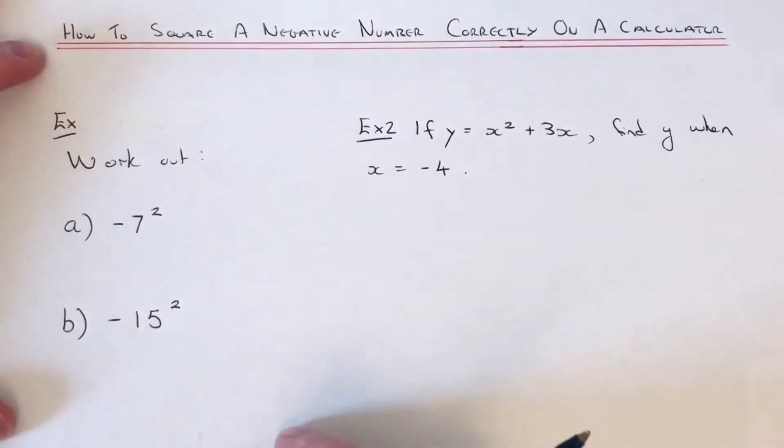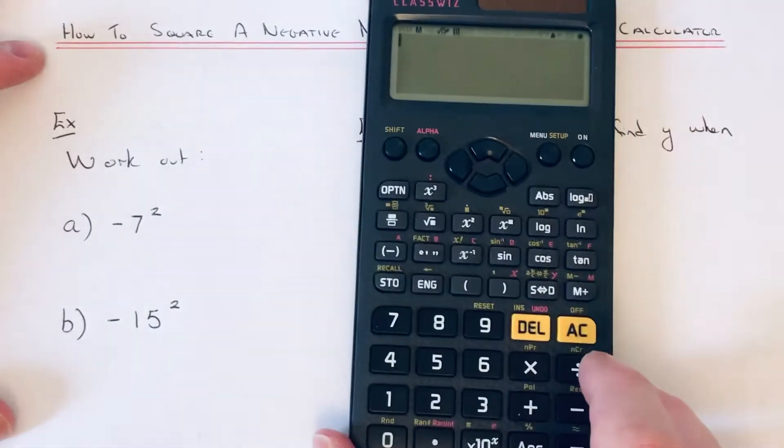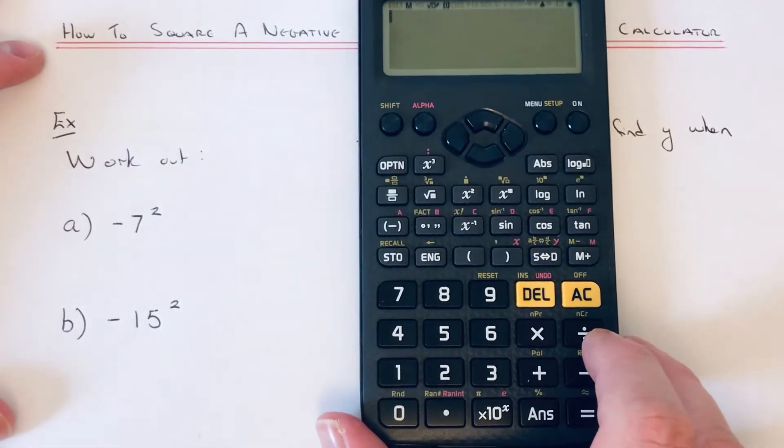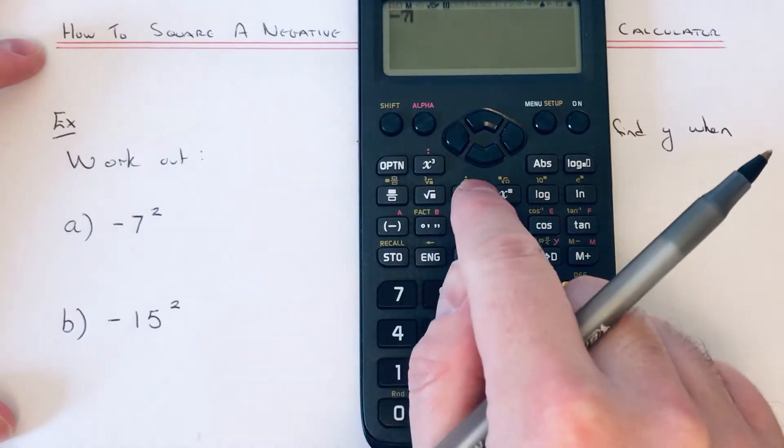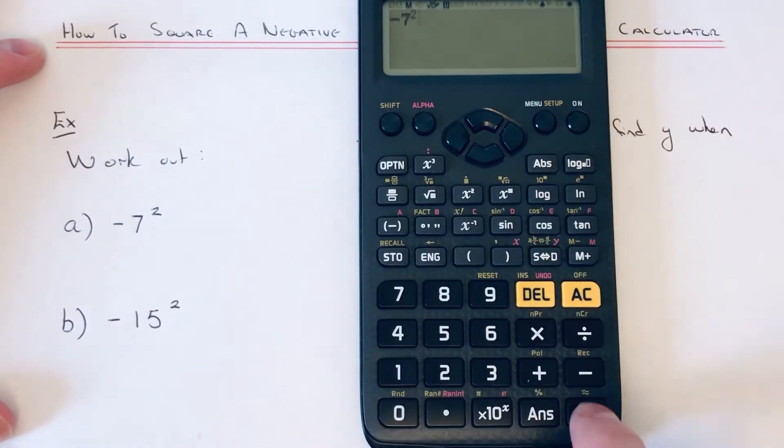Let's have a look at the first example. We're going to work out minus 7 squared. I've got my calculator here. If I just typed it in like it is here, minus 7 squared, it comes out as minus 49, which is the wrong answer.